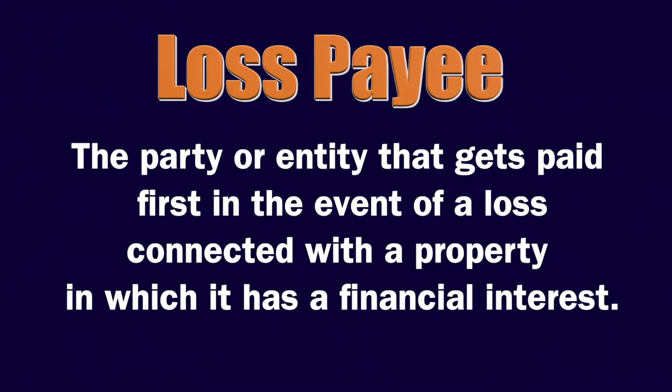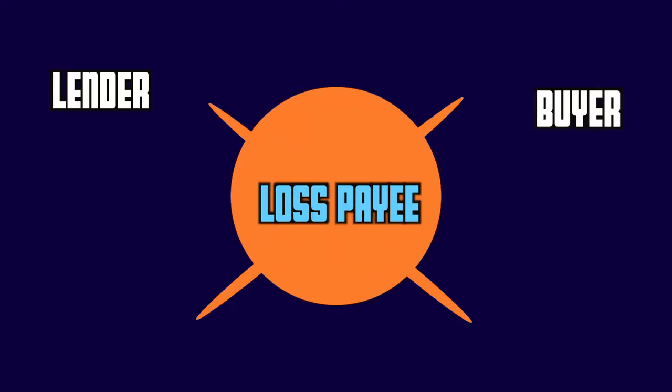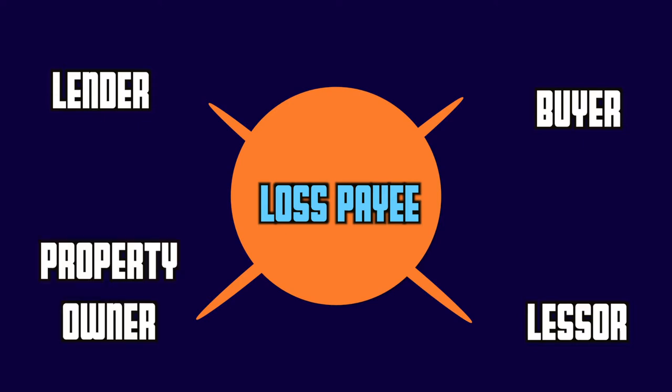What is a loss payee? A loss payee is the party or entity that gets paid first in the event of a loss connected with a property in which it has a financial interest. The property is often held or used by someone other than the person who is named as the loss payee. A lender, a buyer, a leasor, a property owner, or some other third party can be named as a loss payee.